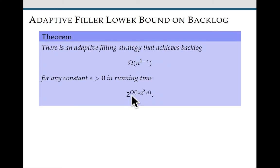First of all, we proved that there's an adaptive filling strategy for achieving backlog omega n to the 1 minus epsilon for any constant epsilon greater than zero in quasi polynomial running time. This is crazy.